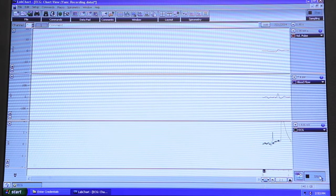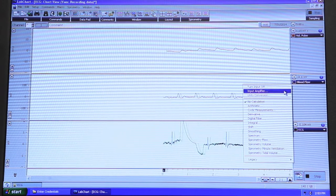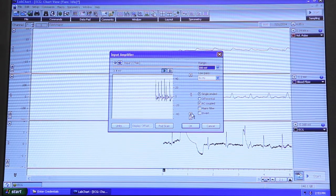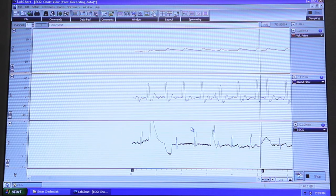Choose the input amplifier option from the channel 2 blood flow channel function pop-up menu. Adjust the range so that the signal occupies about a half to two thirds of the scale when the subject has both hands resting in their lap. Click ok to return to the chart window.